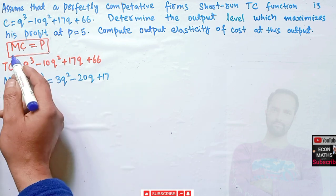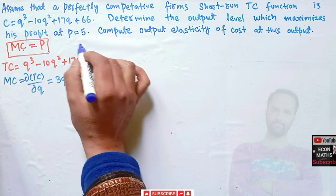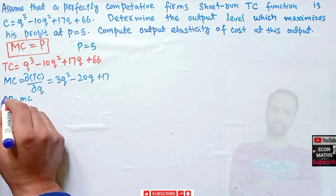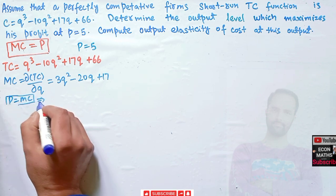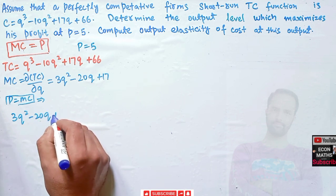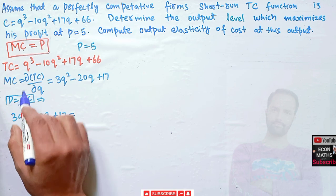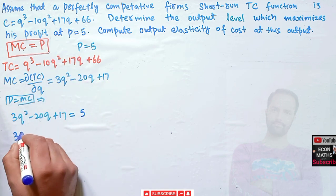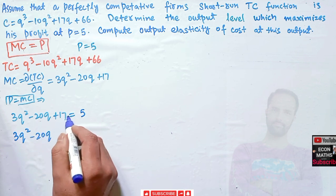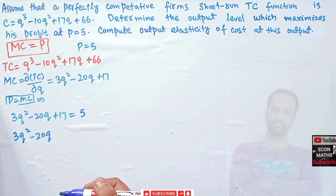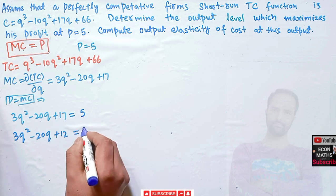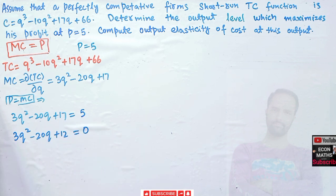Now let us equate marginal cost with price, and price is given as P = 5. So P = MC means 3Q² - 20Q + 17 = 5. Rearranging, we get 3Q² - 20Q + 12 = 0. Now we have a quadratic equation and we want to find the value of Q.